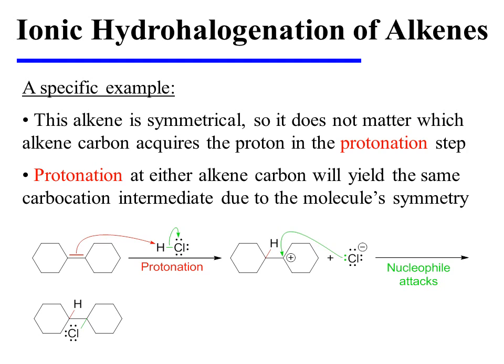In this specific example, the alkene substrate is symmetrical, so it does not matter which alkene carbon acquires the proton in the protonation step, because protonation at either alkene carbon will ultimately yield the same carbocation intermediate and the same product due to the molecule's symmetry. The reaction begins with the attack of the pi bonding electrons on the proton as chloride dissociates. This yields a carbocation intermediate, and chloride attacks the carbocation to yield the alkyl chloride reaction product.